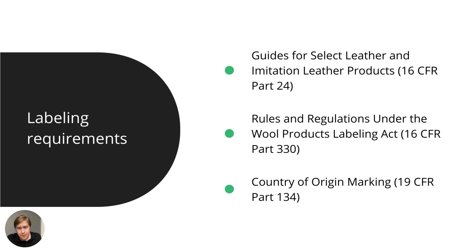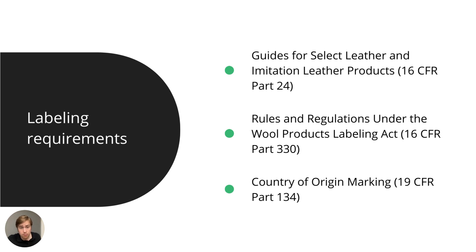You may also need to look at the Wool Products Labeling Act — it's very niche, but relevant if you are selling wool footwear. The FTC guide, which I believe is titled 'Threading Your Way Through the Labeling Requirements for Textile and Wool Products,' covers this. Additionally, country of origin labeling applies to all consumer goods in the United States — you need to accurately declare where the product was manufactured.